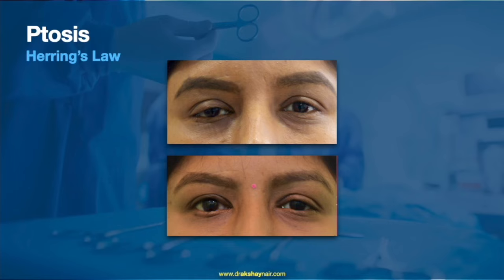One must always check for Hering's Law or Hering's Phenomenon in asymmetric bilateral ptosis. For example, a patient with right eye moderate ptosis — after surgical correction of the right upper eyelid — may have mild ptosis of the left eyelid unmasked. This should be identified preoperatively so the patient can be counselled for potential left eye surgery beforehand.